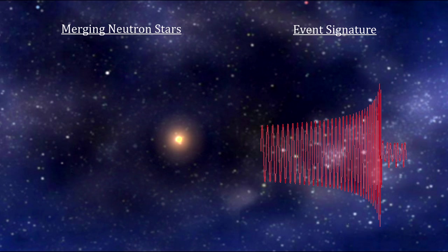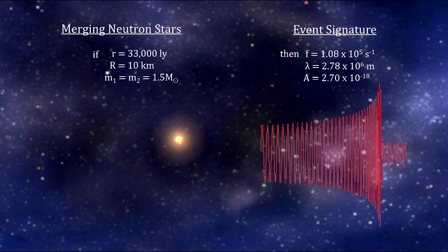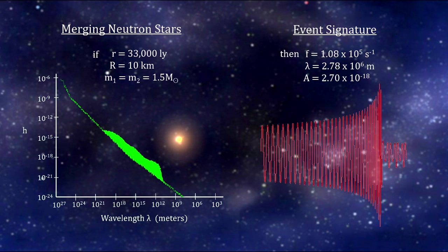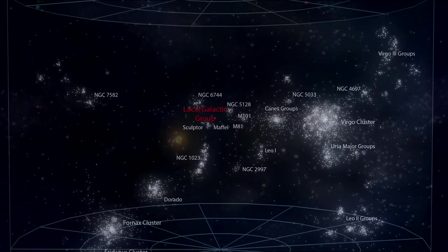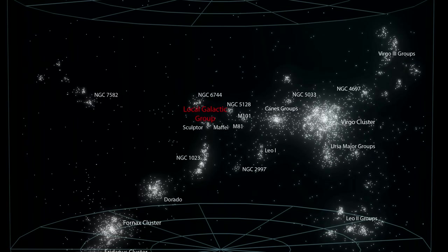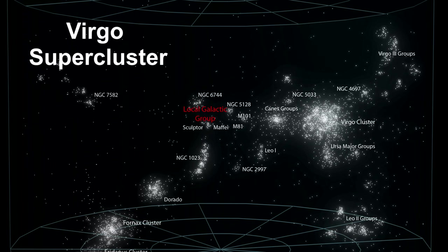The mass of a typical neutron star is 1.5 times the mass of the sun with a radius of only 10 kilometers. If the system is 33,000 light years away an average distance for a Milky Way object it would give us a theoretically detectable wavelength and amplitude. But coalescing neutron stars are not common events. Astronomers estimate that there might be one of these neutron star mergers every 50 years inside the Milky Way.